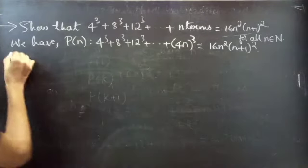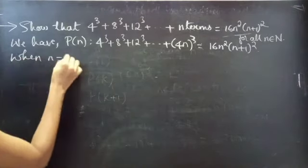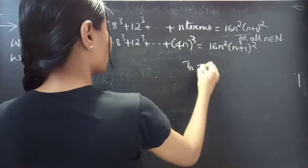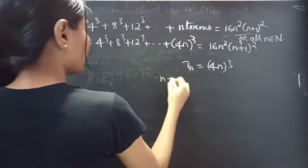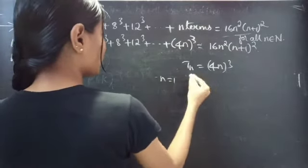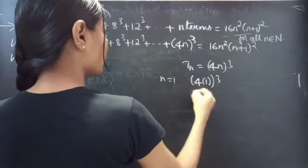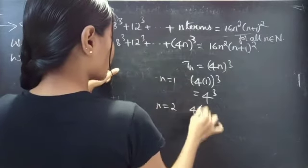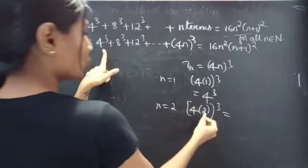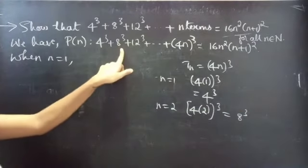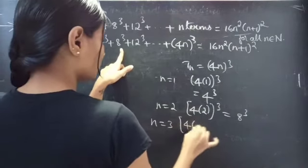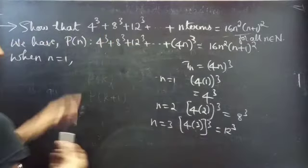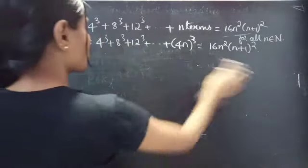So now, when n equals 1, we will take the first term. The nth term equals (4n)³. If you put n equals 1, you get t1, that is the first term: 4 times 1 whole cube equals 4³, which is the first term. When n equals 2, you get the second term: (4×2)³ equals 8³. When n equals 3, you get the third term: (4×3)³ equals 12³. When n equals 1, we take only the first term from LHS.